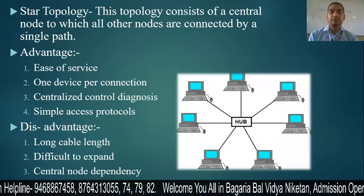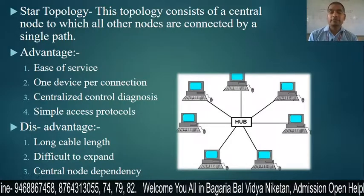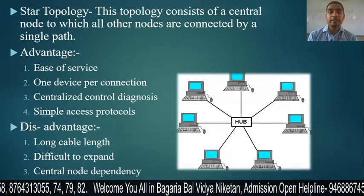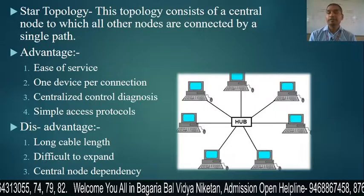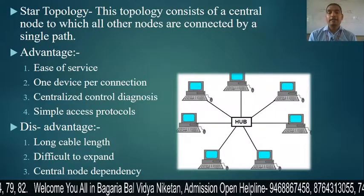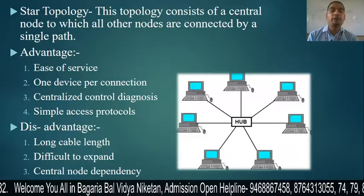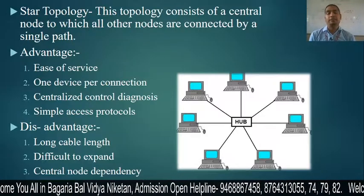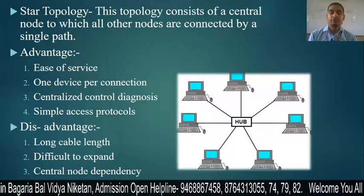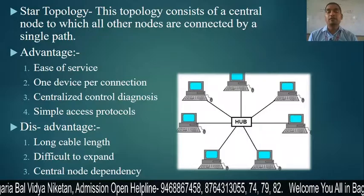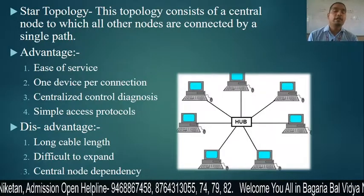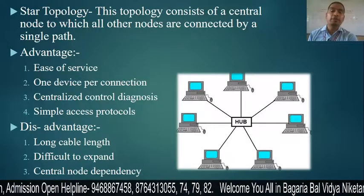The disadvantages of star topology are: first, long cable length — the cable length is quite large because you have to give one cable to every connection. Next is difficult to expand — you cannot increase the number of nodes easily, meaning you can't expand the topology easily. Next is central node dependency — if the central node fails, the entire network goes down.